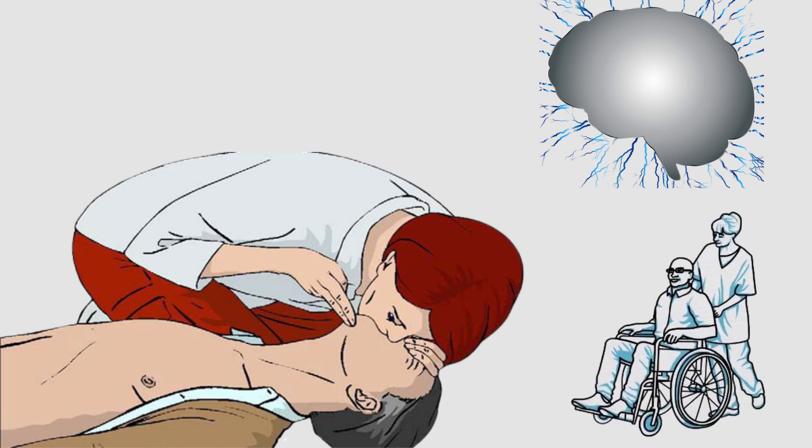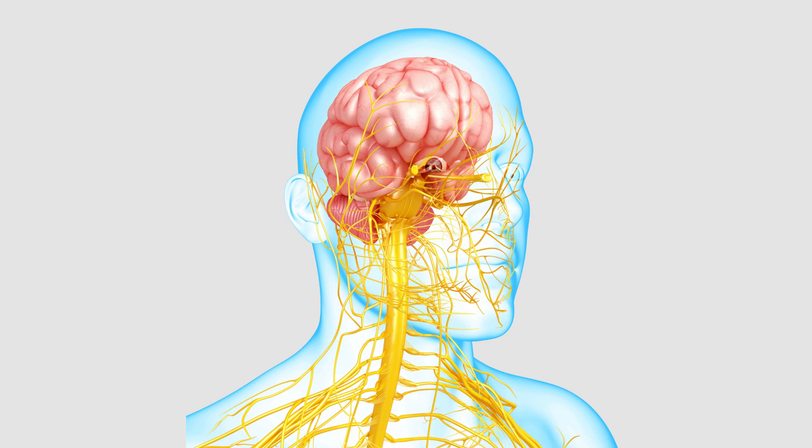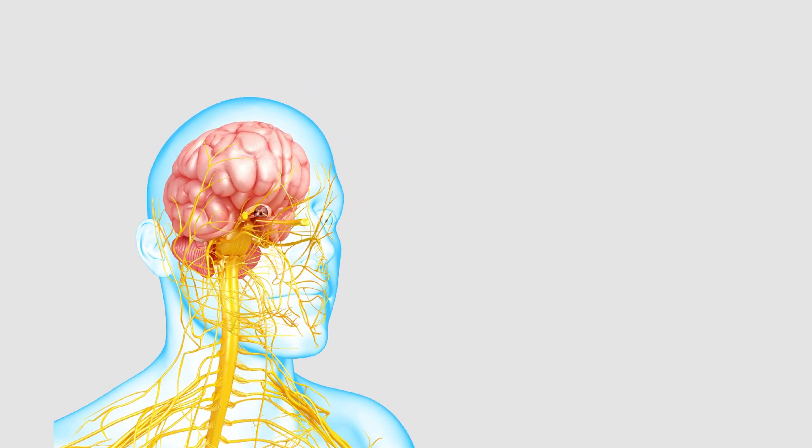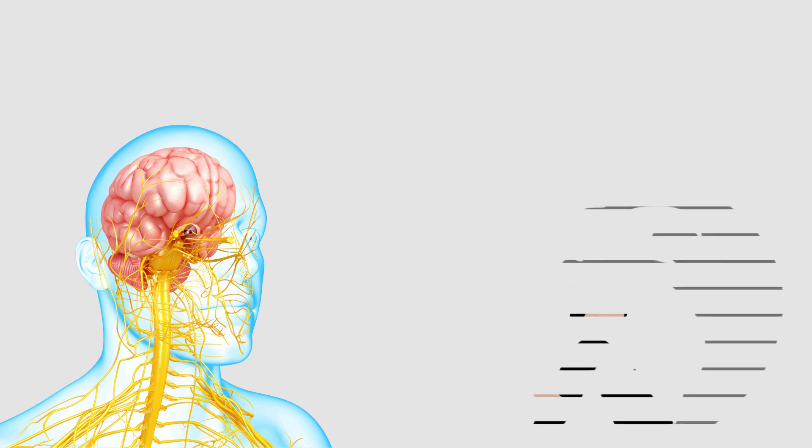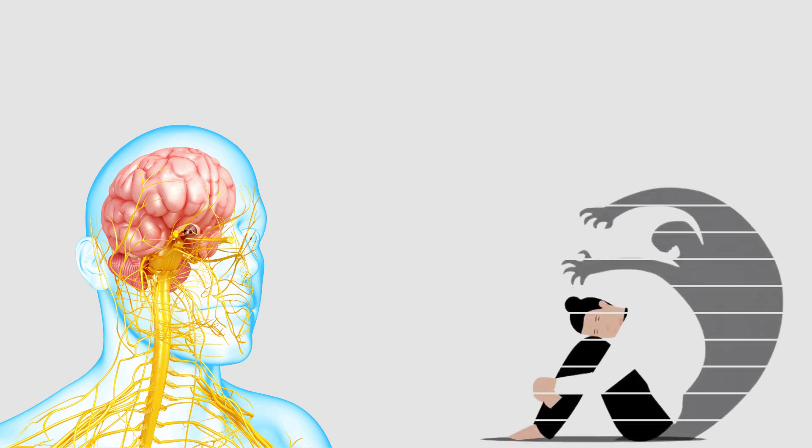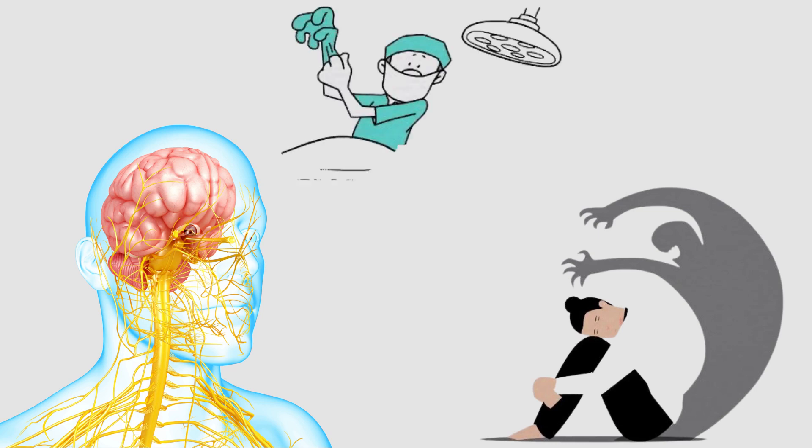Lightning strikes can also cause temporary or permanent paralysis. When the nervous system is affected, the victim can also suffer from neurological disease or change the state of the body. Many people are paralyzed, depressed, have memory loss after being struck by lightning, but you can rest assured that you will not feel any pain because at that time the nerve system that transmits pain information has been damaged by the lightning.